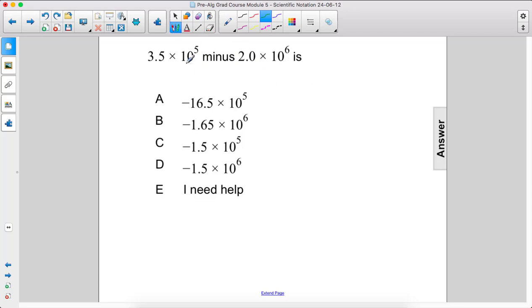So let's go ahead and convert this one, 10 to the 5th, to be 10 to the 6th. So in order to make that a 6, we need to move the decimal one place to the left. So we have 0.35 times 10 to the 6th minus 2.0 times 10 to the 6th.